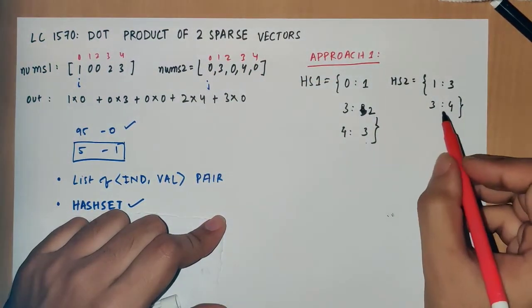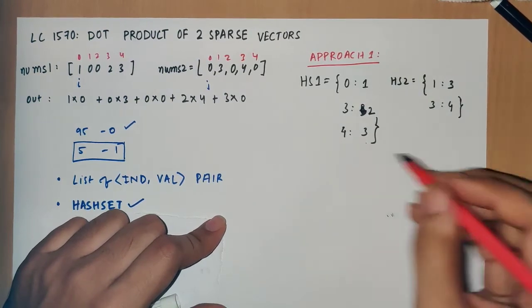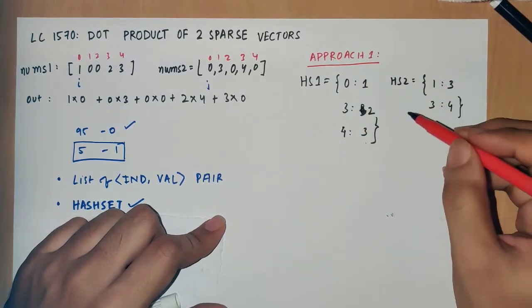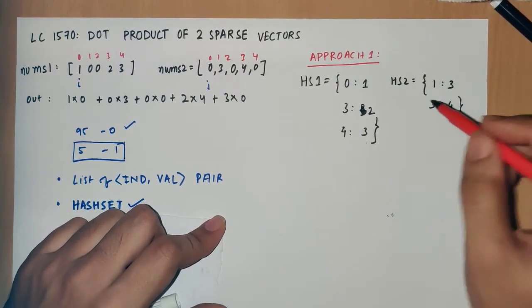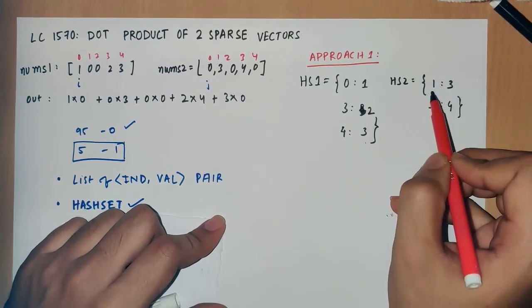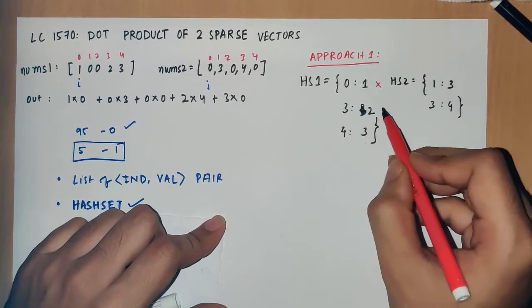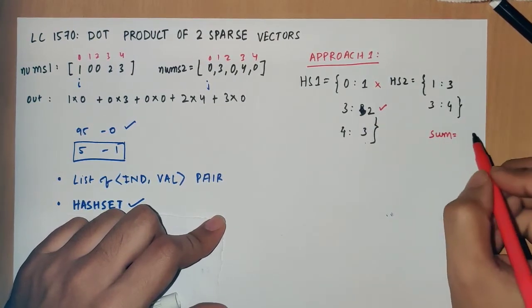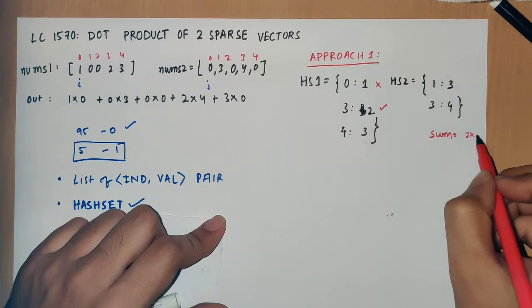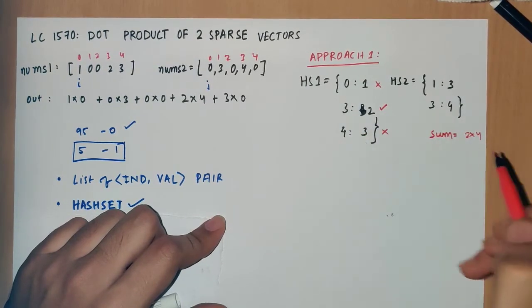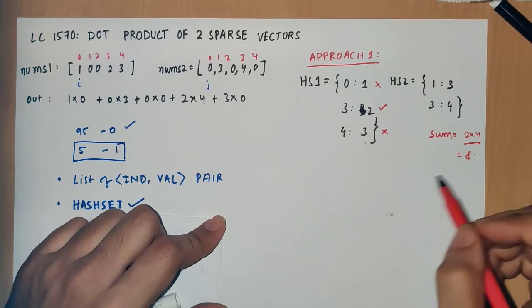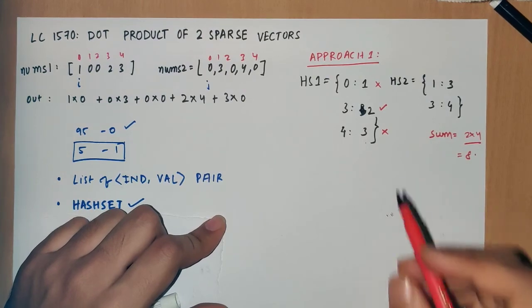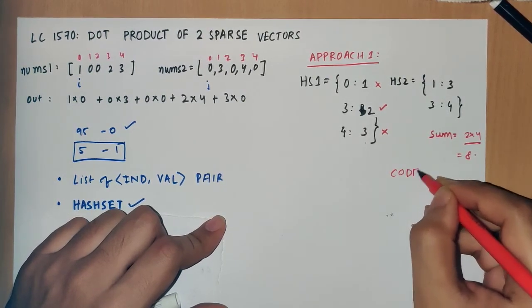Now our only thing left is to find if any of the index in the first hashset is also present in the second hashset. Zero is not there. Three is there, so we can keep a sum variable and multiply 2 into 4. Four is not there, so our output will be 8. This is the simple approach using two hashsets. Thank you, you can find the code in the next one.